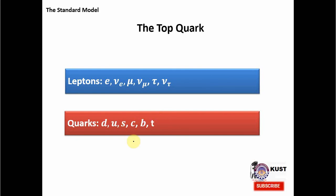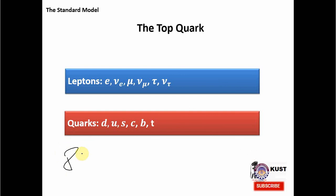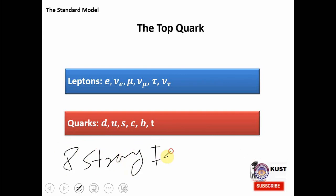Now we move towards the mediators. In the strong force we have 8 gluons — 8 mediators. The reason why it is 8 is a little technical, but we have 8 gluons for the strong force. And then we have 1 gamma particle — the photon — as the mediator of the electromagnetic force. We do not include the graviton because it has not yet been experimentally discovered.